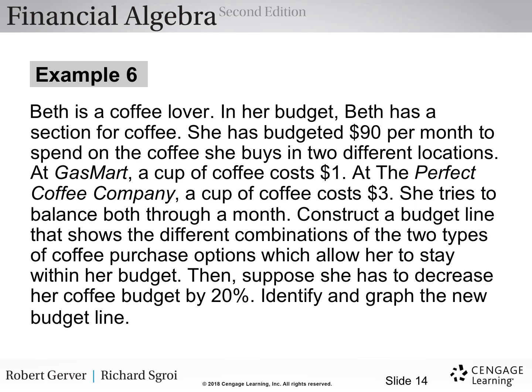Example six. Beth is a coffee lover. In her budget, Beth has a section for coffee. She has budgeted $90 per month to spend on the coffee she buys in two different locations. At Gas Mart, a cup of coffee costs $1. At the Perfect Coffee Company, a cup of coffee costs $3. She tries to balance both through a month. Construct a budget line that shows different combinations of the two types of coffee purchase options which allow her to stay within her budget. Then, suppose she has to decrease her coffee budget by 20%. Identify and graph the new budget line.